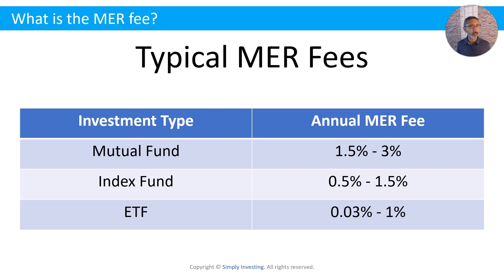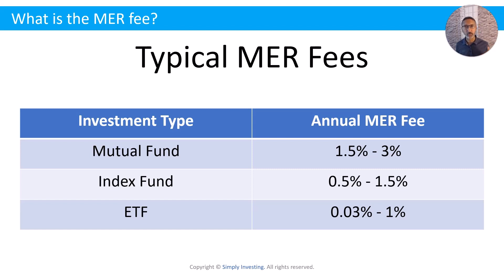Mutual funds typically have a portfolio manager responsible for managing the investment — deciding what to buy, when to buy, and when to sell the stocks. An index fund does not have a portfolio manager; it's not actively managed. An index fund will generally buy all of the stocks in the index. For an S&P 500 index fund, it buys all 500 stocks. The fund only sells or buys more when a company is removed or added to the index, or as more investors put money in.